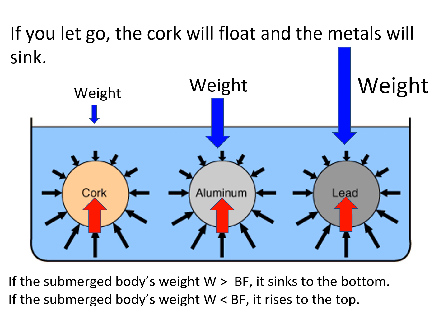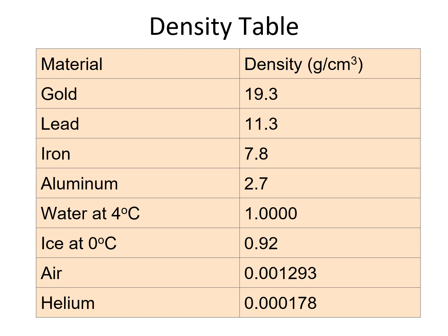If the submerged body's weight is greater than the buoyant force — the blue arrow bigger than the red — then the object sinks to the bottom. If the weight is less than the buoyant force, it rises to the top. Scientists have made all kinds of density measurements, so to know whether something will float or sink, for a pure substance it's just a matter of looking up the densities. If the object's density is greater than water — which is 1.0000 grams per cubic centimeter at 4 degrees Celsius — it sinks. If its density is less than 1, it floats.